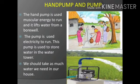Hand Pump and Pump: The hand pump uses muscular energy to run and it lifts water from a well. The electric pump uses electricity to run. This pump is used to store water in the water tower.